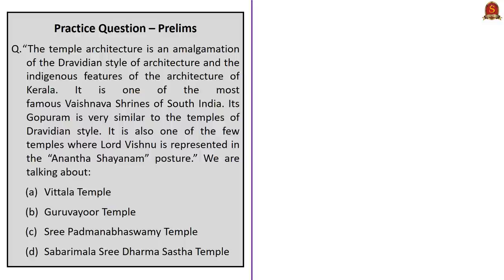The practice question describes a temple whose architecture is an amalgamation of the Dravidian style and indigenous features of Kerala architecture, one of the most famous Vaishnava shrines of South India, whose gopuram is very similar to temples of the Dravidian style, and where Lord Vishnu is represented in the Anantashayanam posture. The correct answer is option C: Sri Padmanabha Swami Temple.